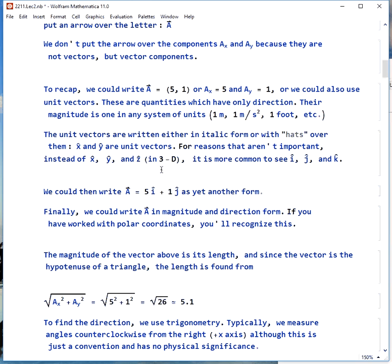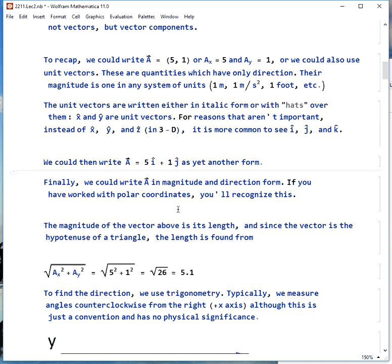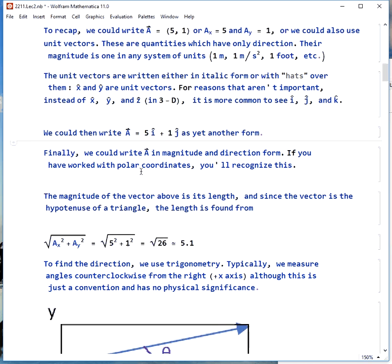Although, unfortunately, rather than x hat, y hat, and z hat, you usually see i hat, j hat, and k hat. So we could write A as 5 i hat plus 1 j hat, and that would be another vector form. We could also write A in magnitude and direction. If you've used polar coordinates before, you'll have seen this.